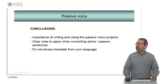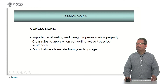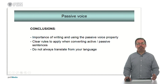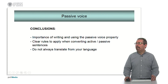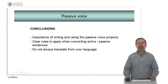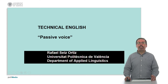As a conclusion, it is important to write and use the passive voice correctly in English. To know the rules to transform and convert the active and passive sentences and the verbs. And you don't have to translate from your language — you have to actually use the corresponding passive construction in English, especially with two-object verbs. Thank you very much, and I hope this was useful for you.